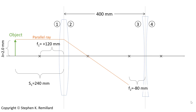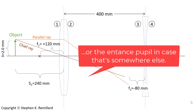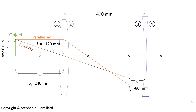A ray that is always easy to draw is a chief ray, because it goes right through the dead center of a thin lens. For a thin lens, everything happens at the vertical dashed line — the principal plane. You can also draw a focal ray: it goes from the tip of the object through the focal point, hits the lens, and emerges parallel. All three principal rays converge at an image. It's a real image because it's formed from real light, and it's inverted. That real image from lens 1 becomes the object for lens 2.